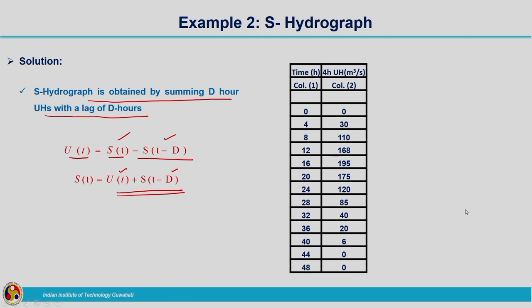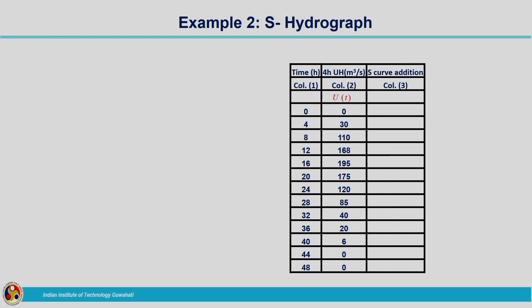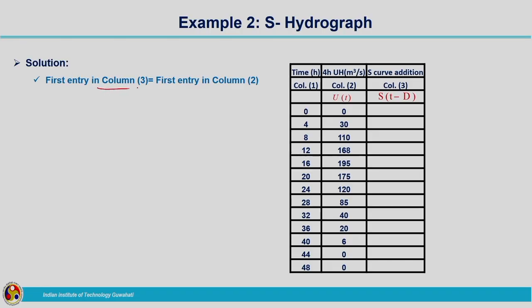Now we can proceed to solve the example. The ordinates given in column 2 are represented by the notation U(t). The next step is to find out the S curve addition. We need to find the ordinates corresponding to S curve addition before we can find S curve ordinates for time t. This S curve addition is represented by the notation S(t−d). At time t equals 0, both unit hydrograph and S hydrograph ordinates are 0. The first entry in column 3 is the same as the first entry in column 2, which is 0.